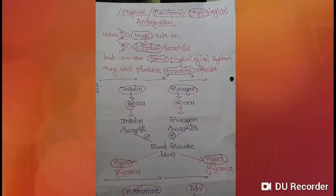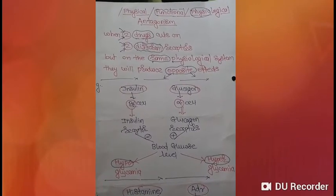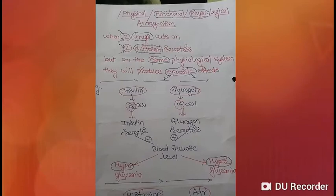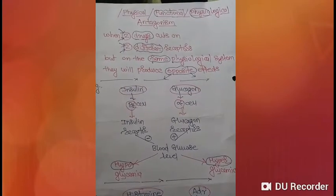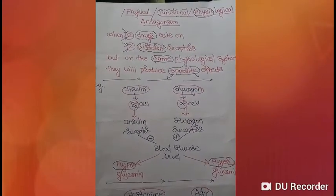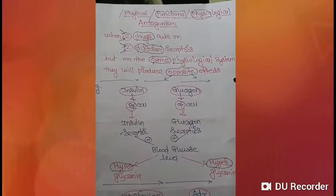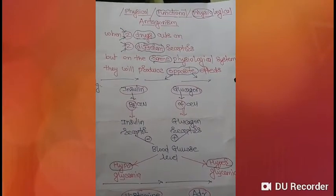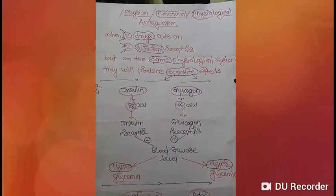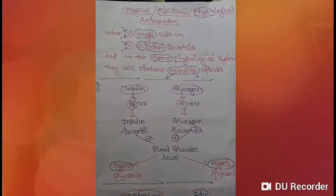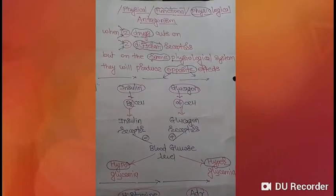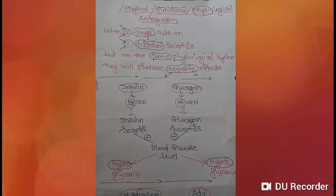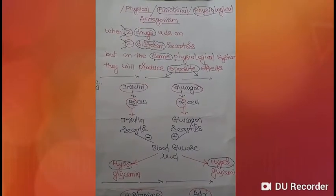Today we are going to discuss functional antagonism, or physiological antagonism. By definition, when two drugs act on two different receptors but on the same physiological system, they will produce opposite effects.